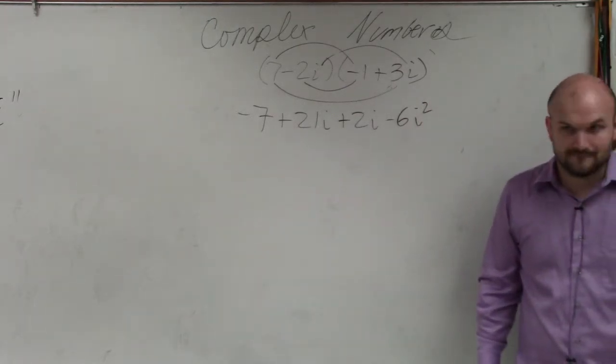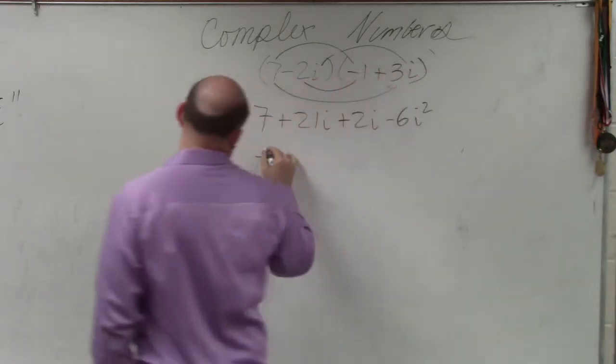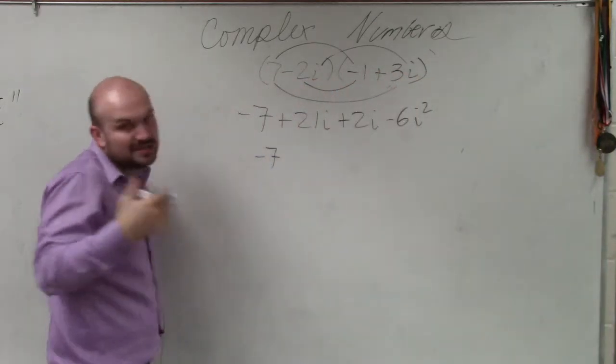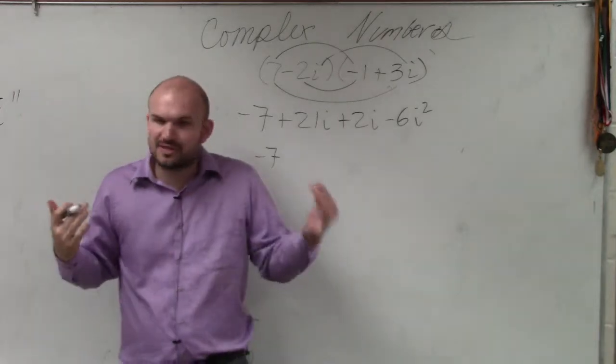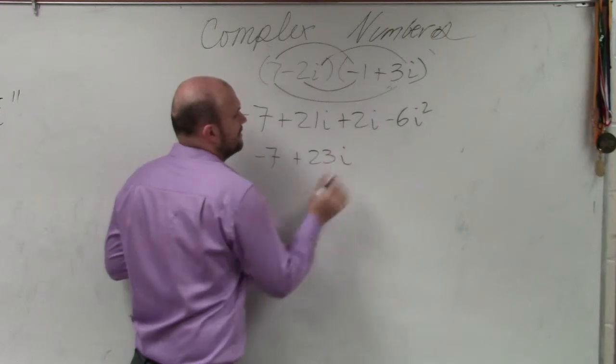Everybody follows me? Okay. Now let's combine the terms that we have. So I have negative 7. Again, as I mentioned, what's nice about i is you can think of it just like a variable.